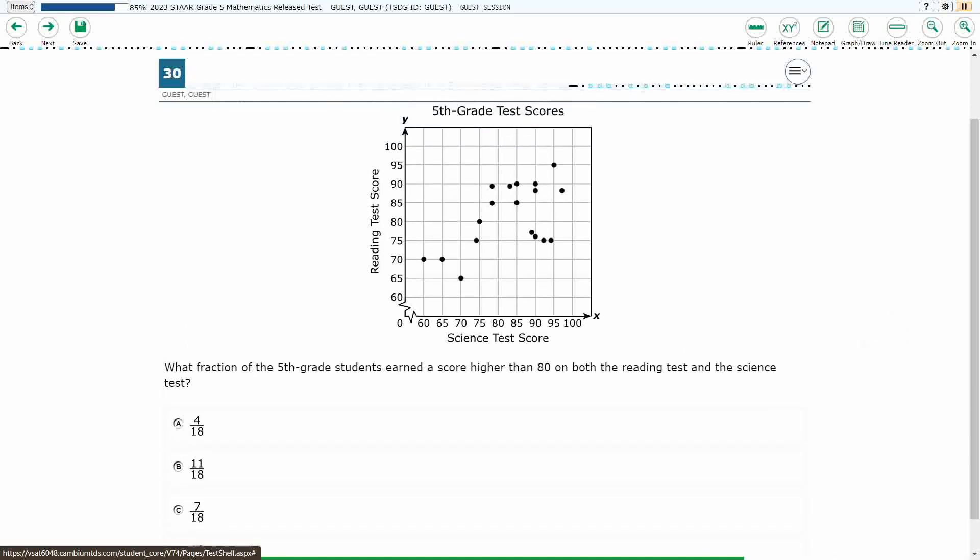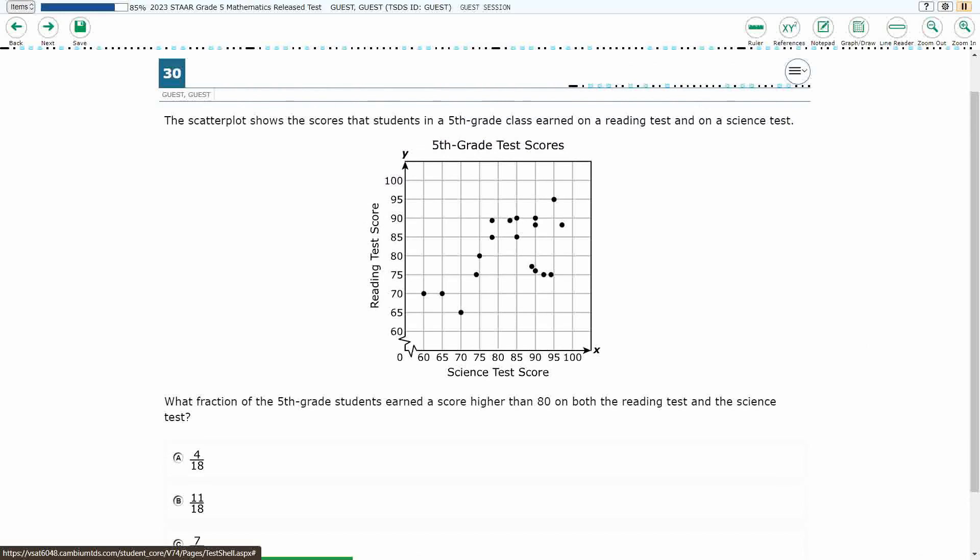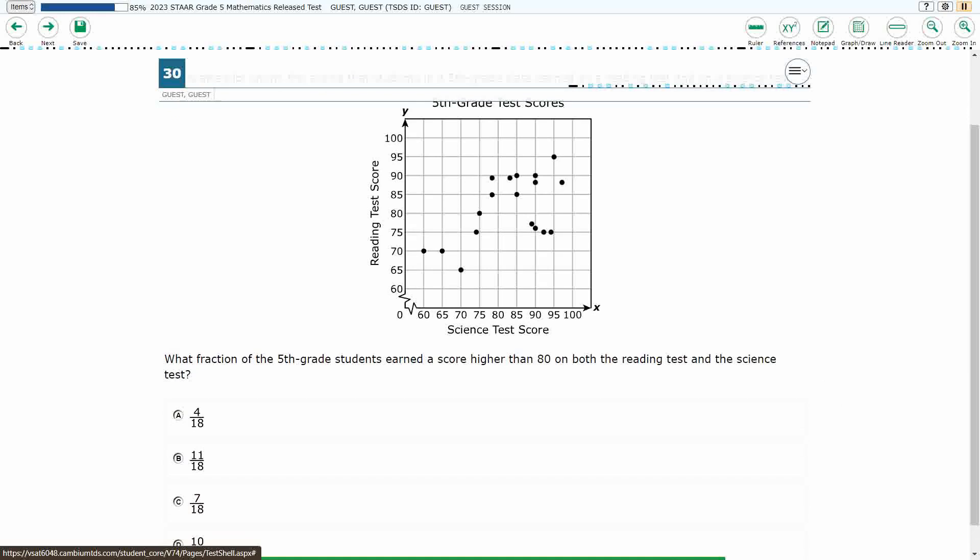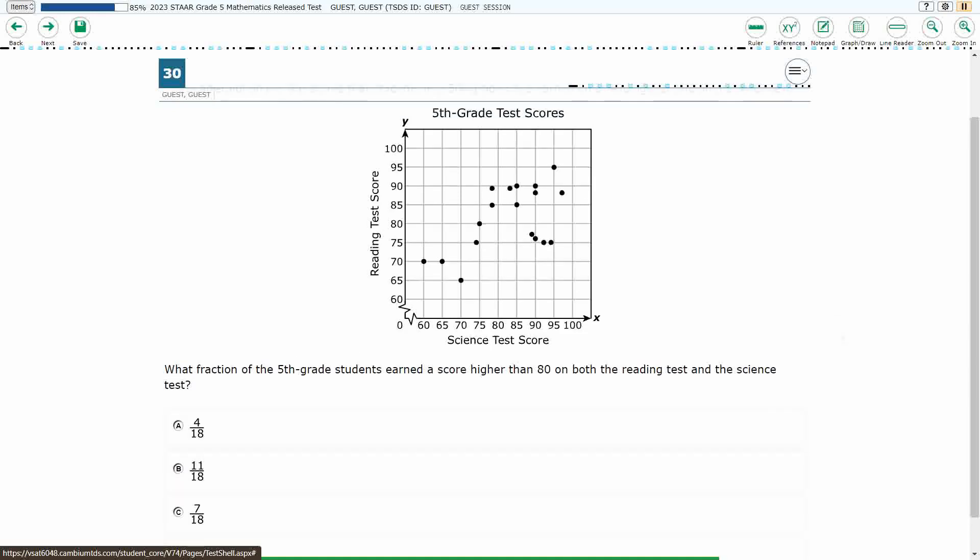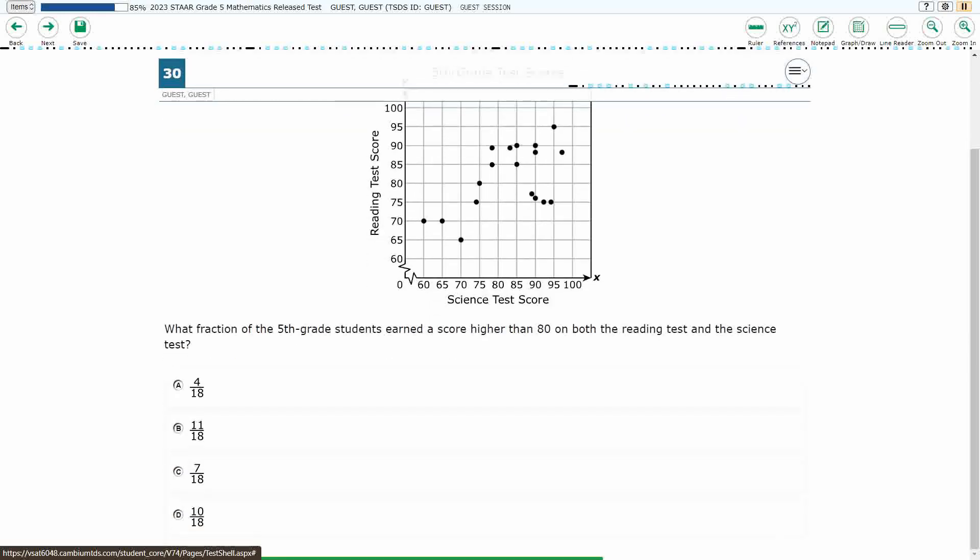Alright, so we have a scatter plot here and it shows the scores that students in a 5th grade class earned on their test, between their science and their reading. So there is kind of a relationship here, but you see we've got four that are kind of low here. So we need to find what fraction of the 5th grade students earned a score higher than 80 on both the reading test and the science test.